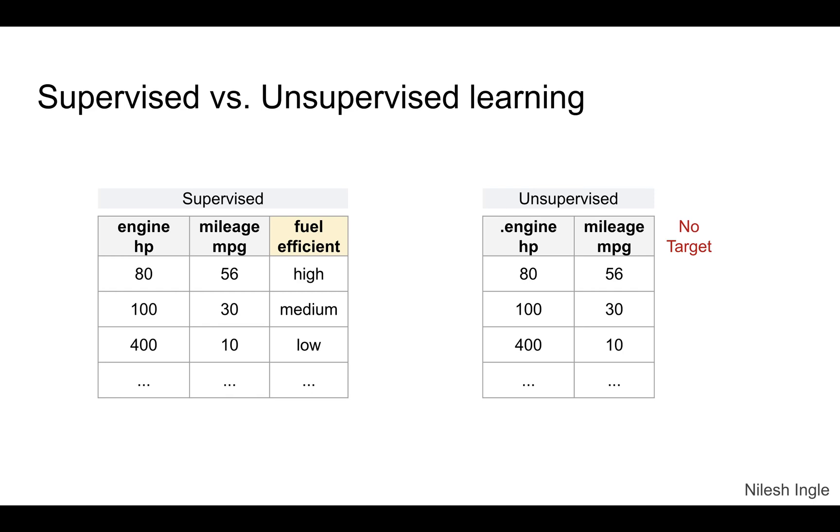We have seen that when we train with supervised learning methods we input both the features as well as targets. This is represented as X_train and this is our y_train that we input to the fit method when performing the fit. The test data also has both the features and the target, so we use that target to get the final scores.